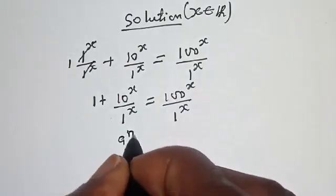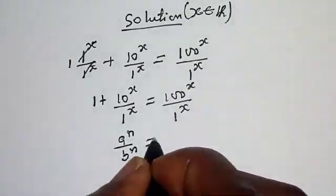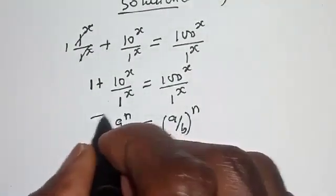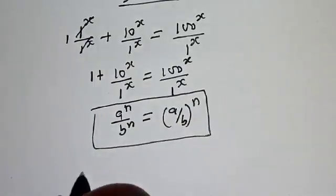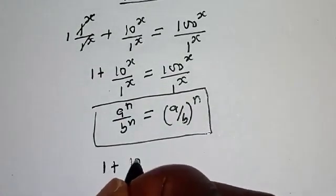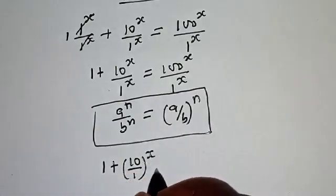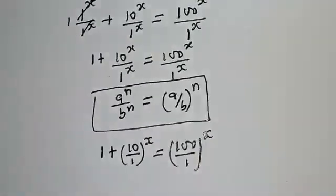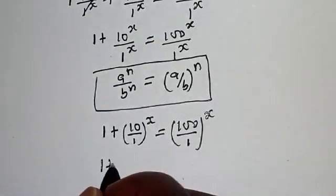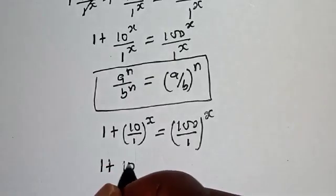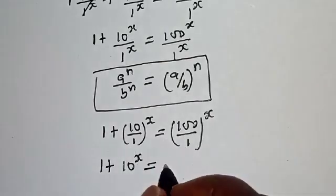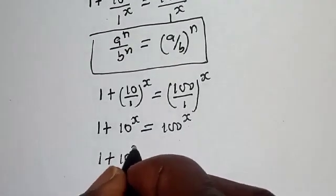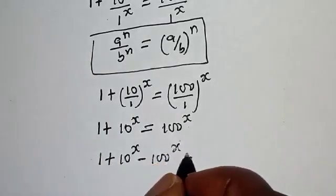Take note that if you have a raised to power n over b raised to power n, this is equal to a over b, to the power of n. So we have 1 plus 10 over 1 to the power of s, is equal to 100 over 1 to the power of s. This simplifies to 1 plus 10 raised to power s is equal to 100 raised to power s. Bringing everything to one side: 1 plus 10 raised to power s minus 100 raised to power s is equal to 0.